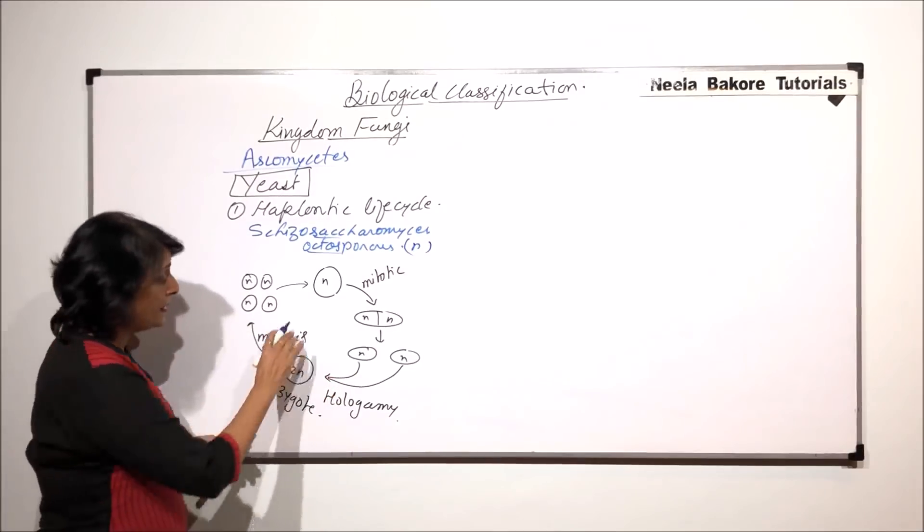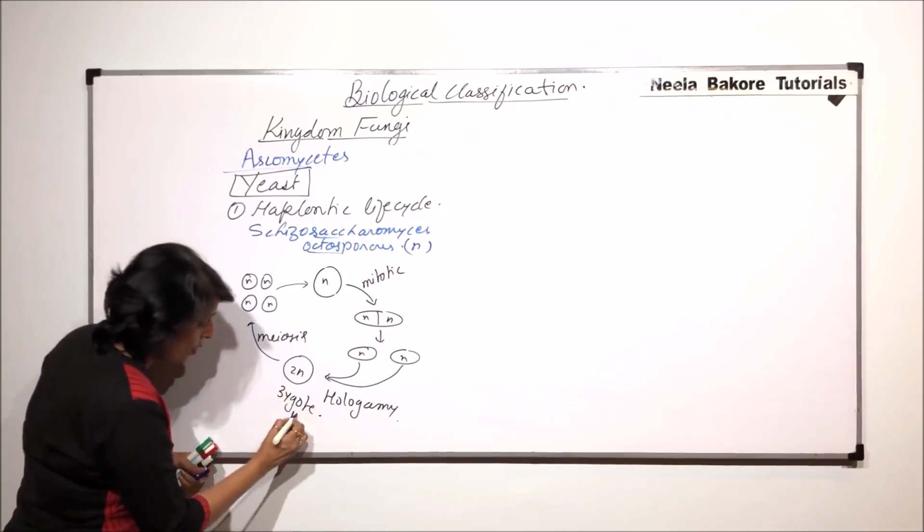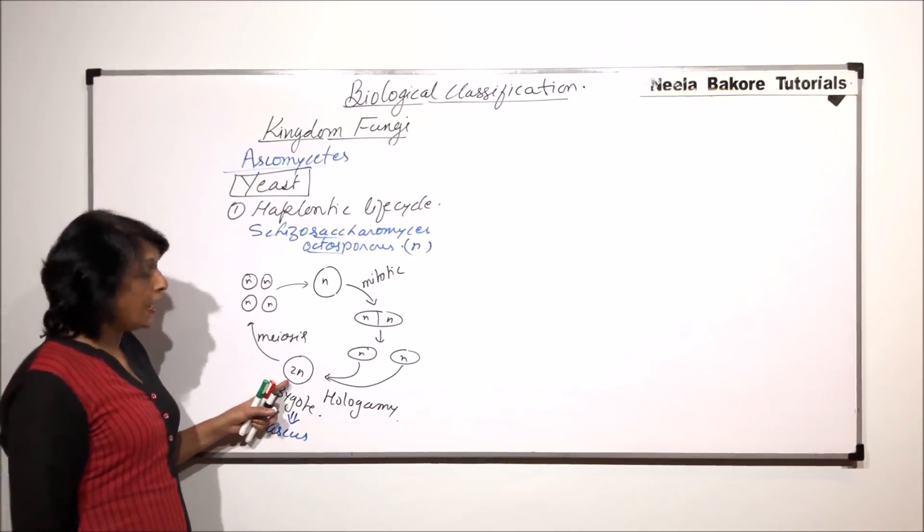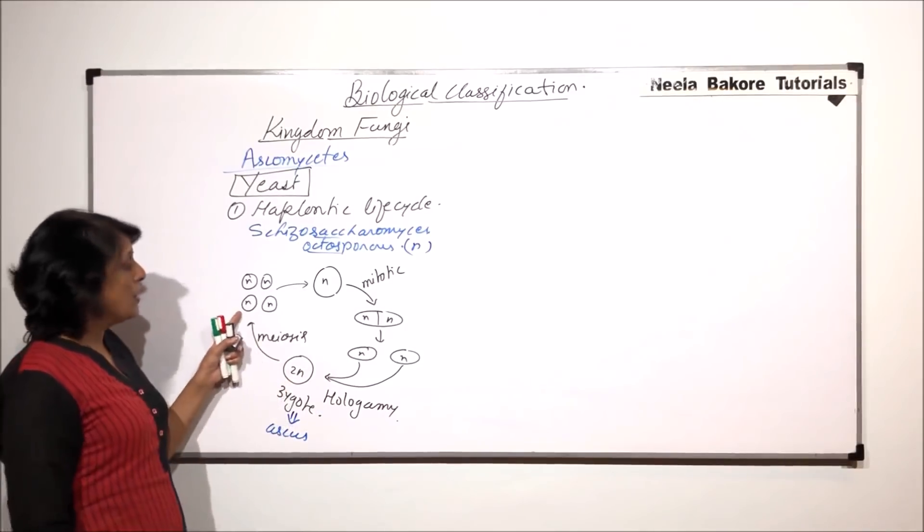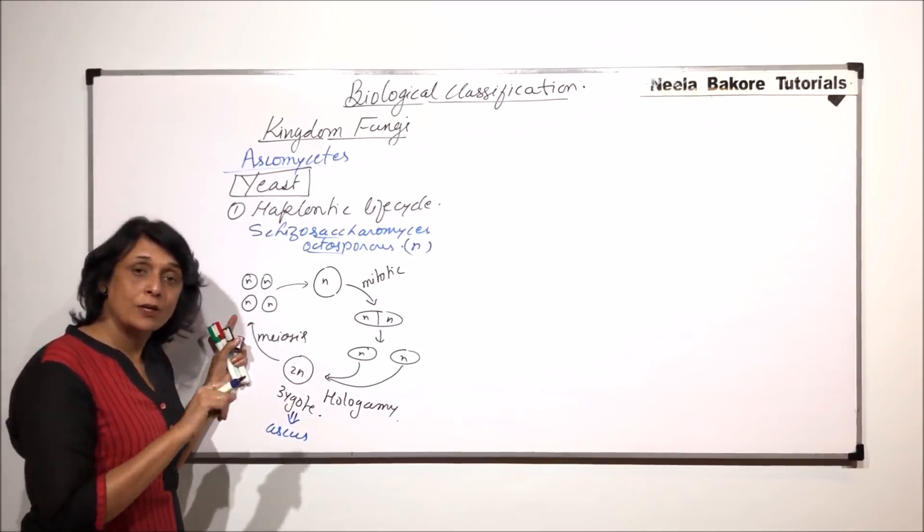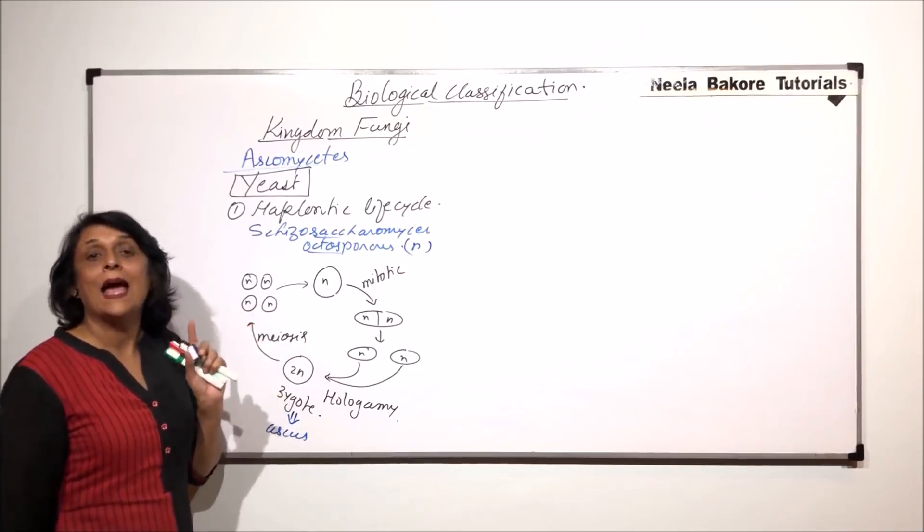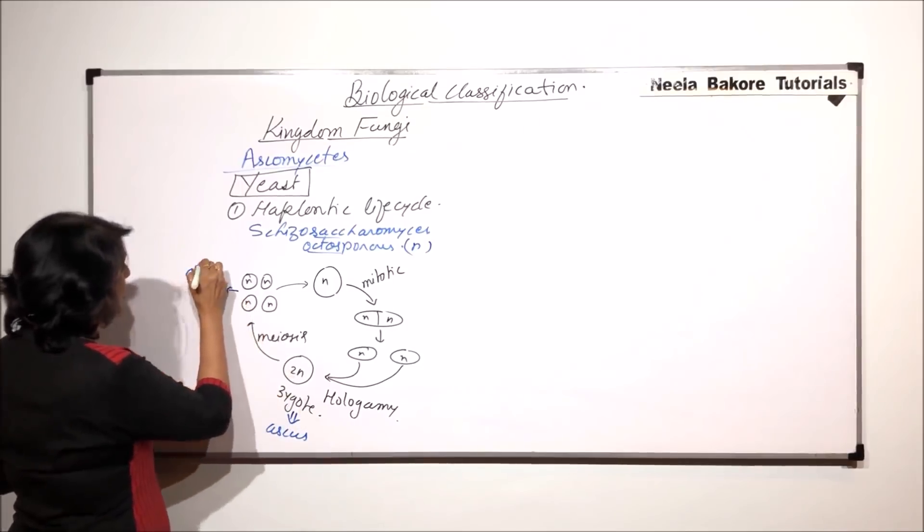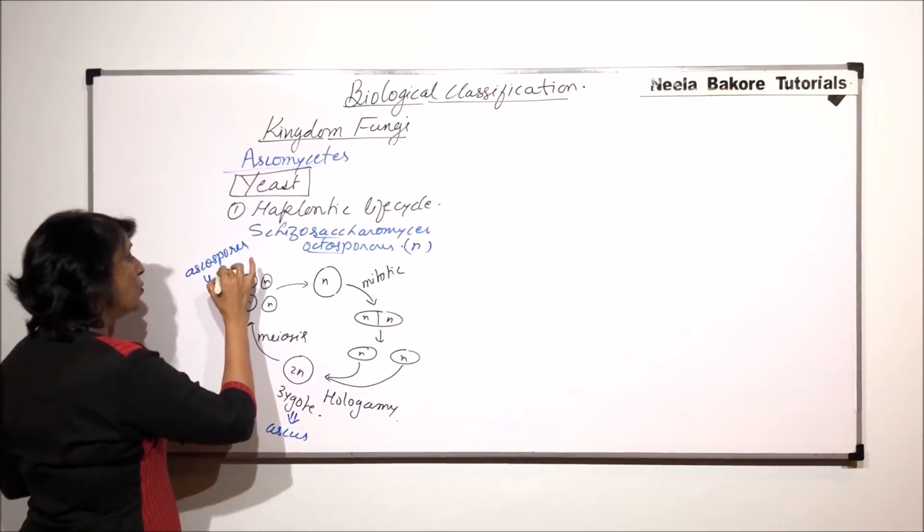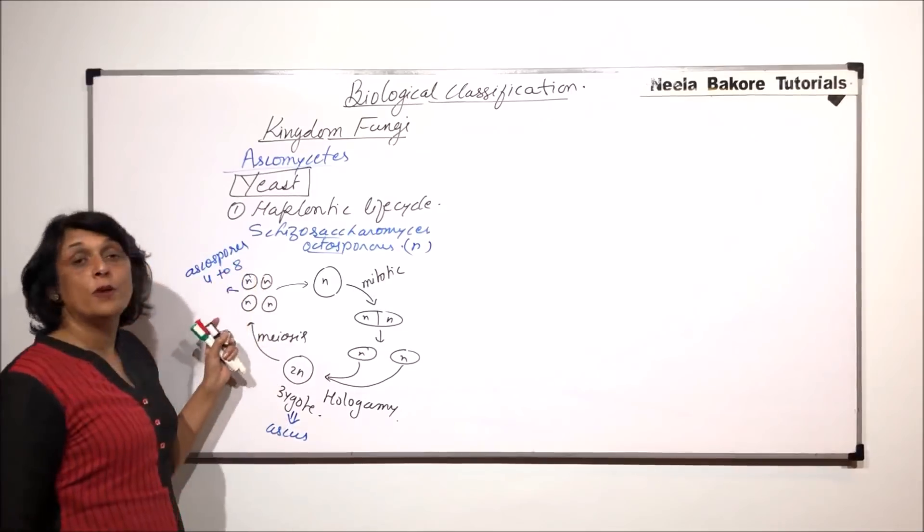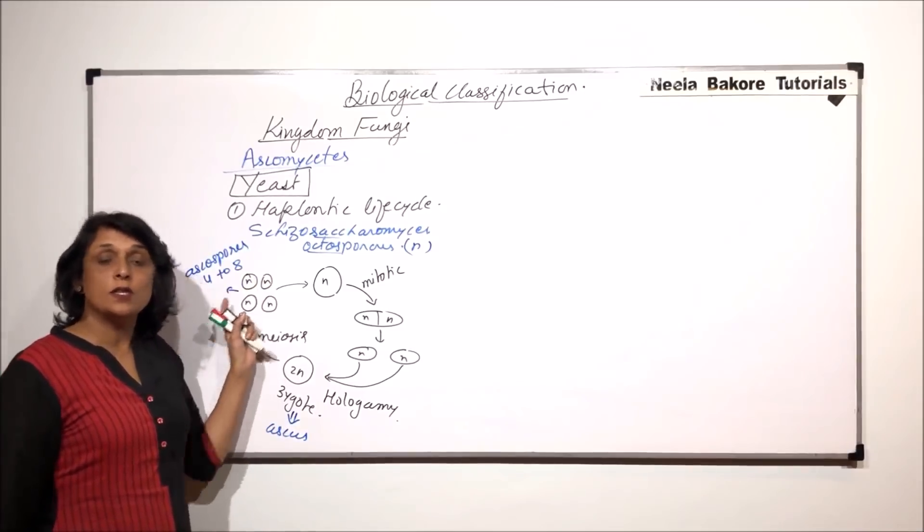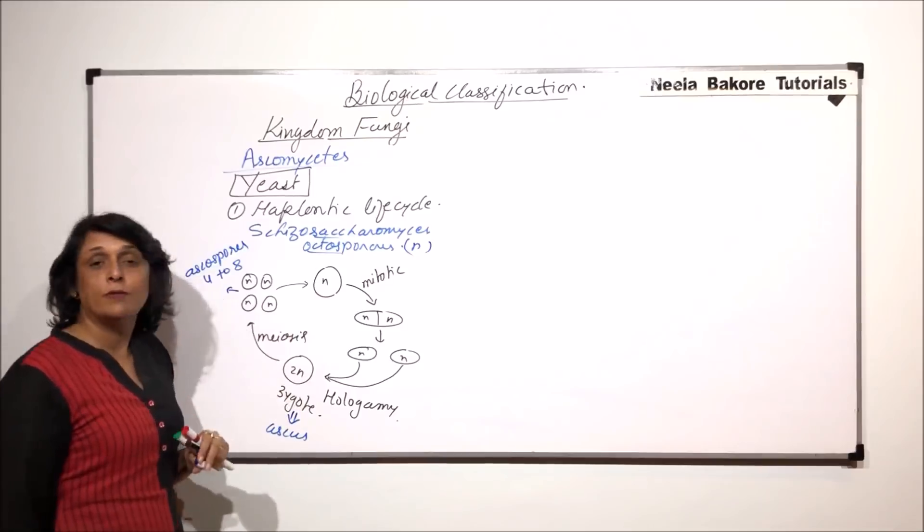Now when this sexual reproduction is taking place, the zygote is also known as ascus. If it undergoes only one meiotic division, we would get these haploid cells. But if meiosis is followed by mitosis, we can get 8 ascospores. These structures are known as ascospores and their number could vary from 4 to 8. Either they are going to be 4, that means if only meiosis takes place, there would be 4. If meiosis is followed by mitosis, then 8.